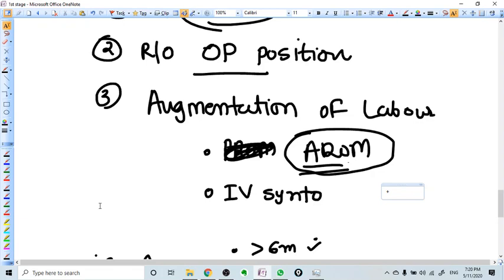It should be an artificially ruptured membrane. If the uterine contractions are not good, you have to add oxytocin. If all these measures are taken and still labor is not progressing, then you make the diagnosis of arrest labor.